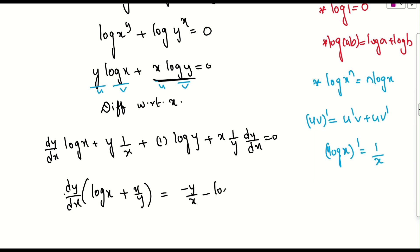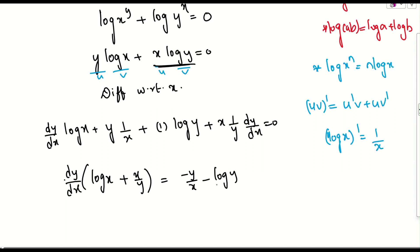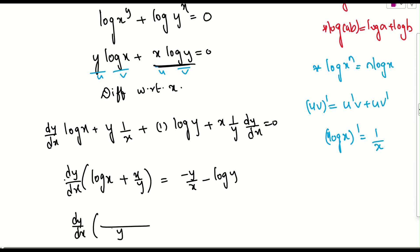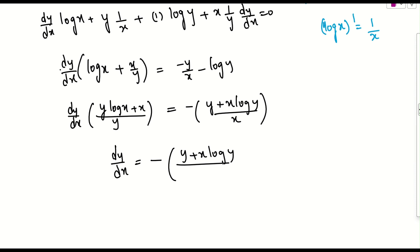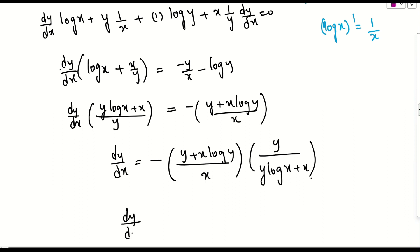Taking LCM on the left side: dy/dx times (y log x plus x) all over y. On the right side, taking minus common and LCM: minus (y plus x log y) all over x. Keeping dy/dx on the left and sending the other term to the right gives us dy/dx equals the reciprocal of the left coefficient times the right side.